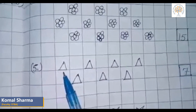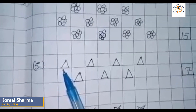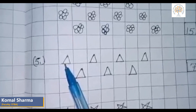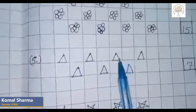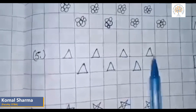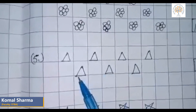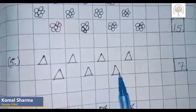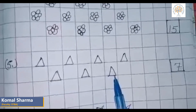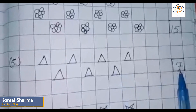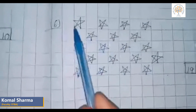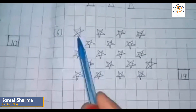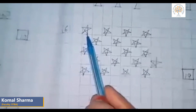Now we count triangles. How many triangles are there? One, two, three, four, five, six, seven. There are seven triangles. We will write seven in the box.